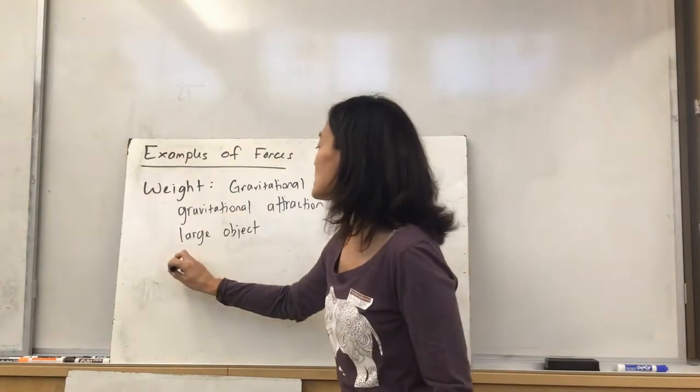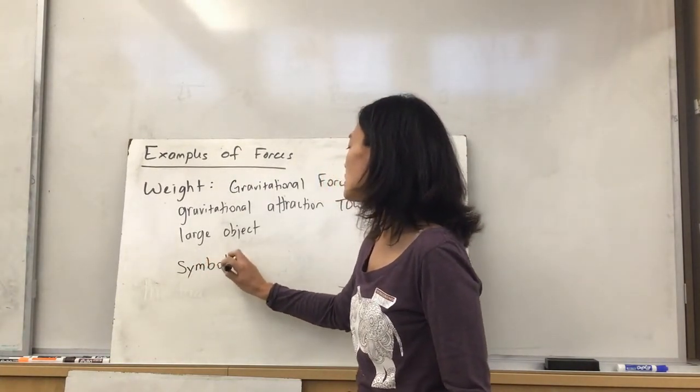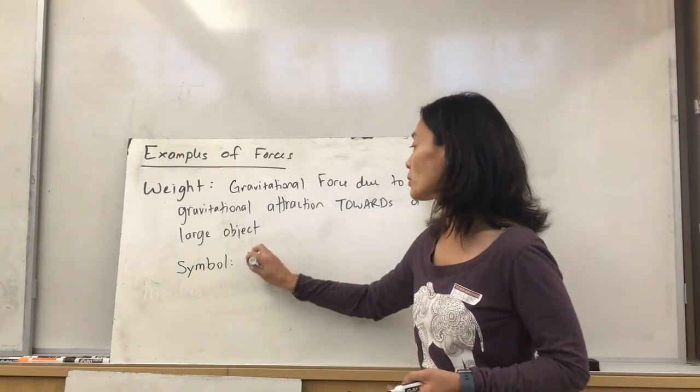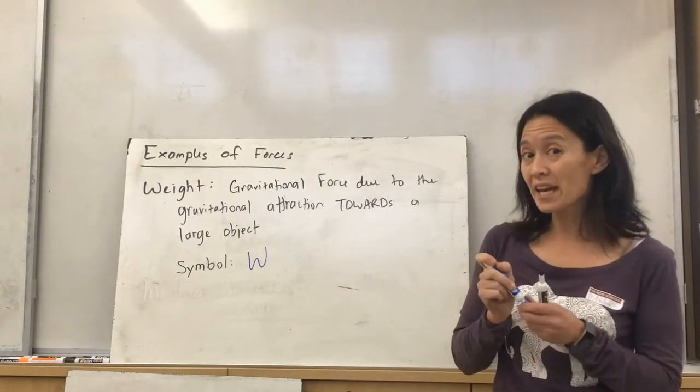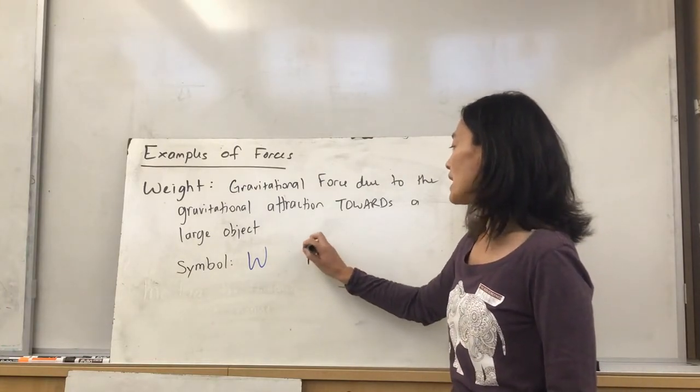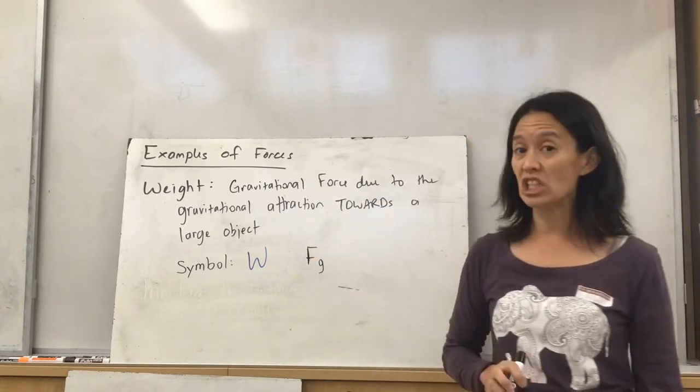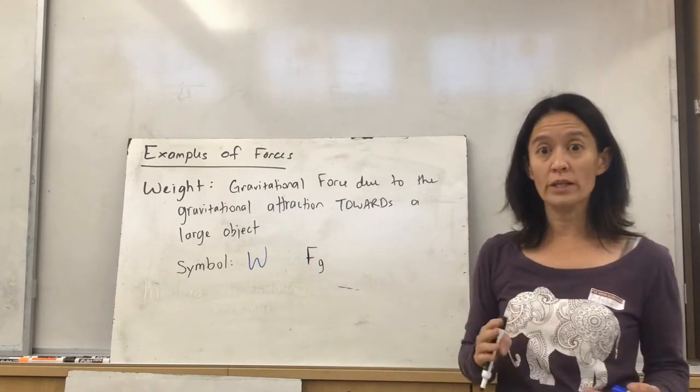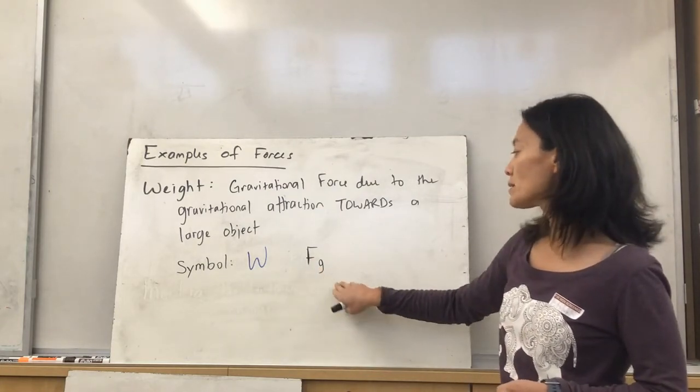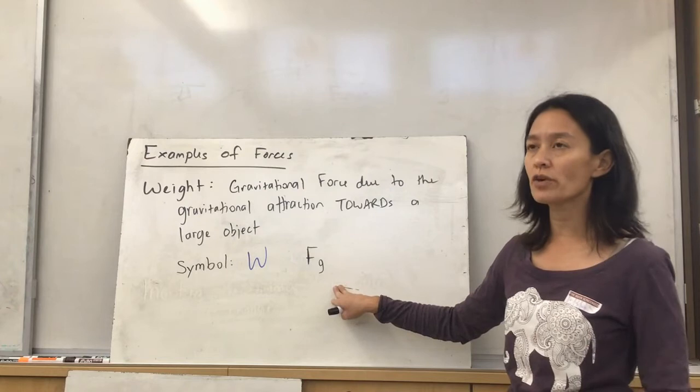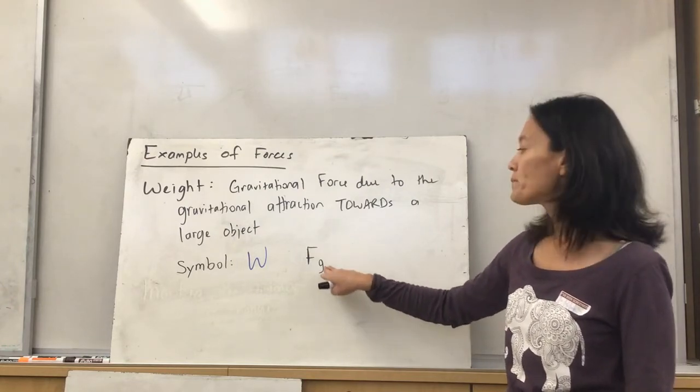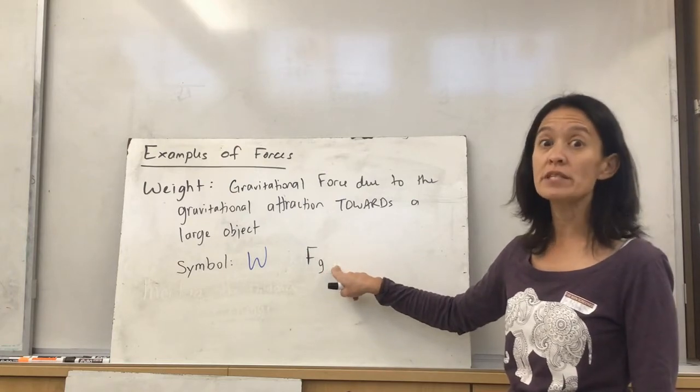We, in this class, symbolize the gravitational force of weight as W. Some textbooks and other sites or sources may symbolize it as F sub G. I'm trying to be consistent with your Giancoli textbook, so we're going to stick with the W. But note that sometimes I may give you a lecture from my college prep physics course or expose you to some other book and they may symbolize it as F sub G.